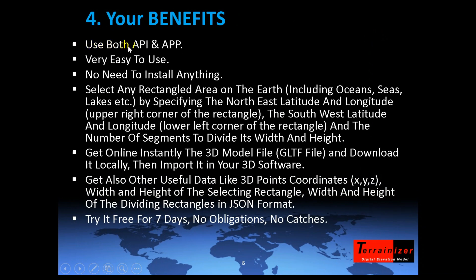Your benefits: use both API and app. Very easy to use, no need to install anything. Select any rectangle area on the earth, including oceans, seas, lakes, etc., by specifying the northeast latitude and longitude, the southwest latitude and longitude, and the number of segments to divide its width and height. Get online instantly the 3D model file, download it locally, then import it in your 3D software. Get also other useful data like 3D point coordinates x, y, z, width and height of the selected rectangle, and width and height of the dividing rectangles in JSON format. Try it free for 7 days, no obligations, no catches.